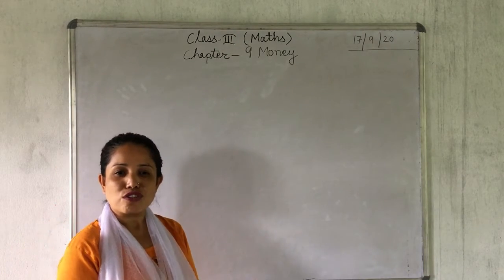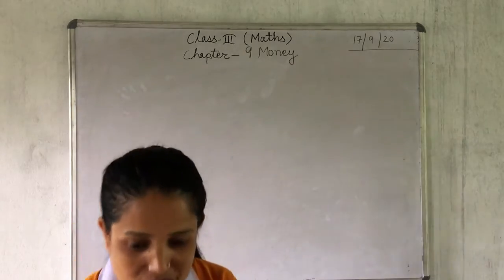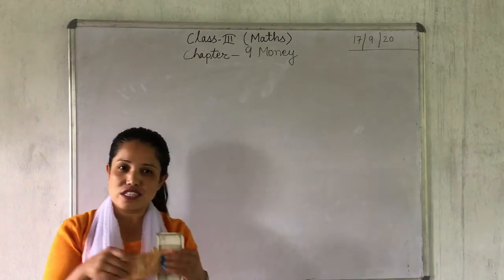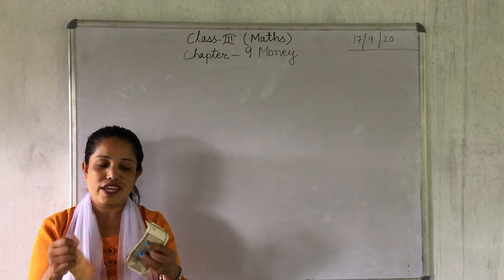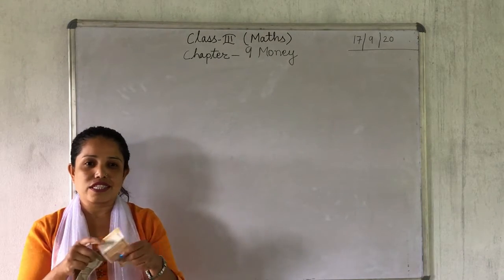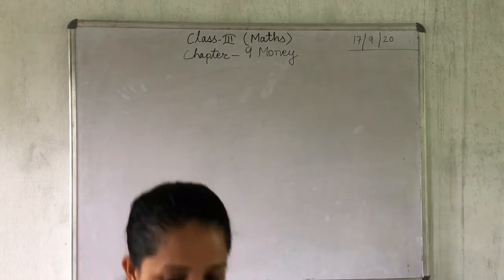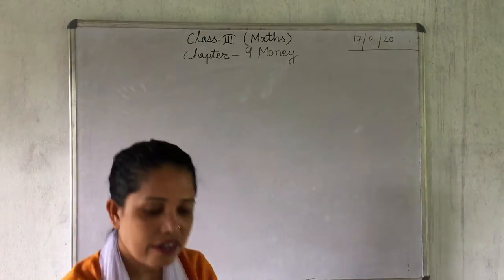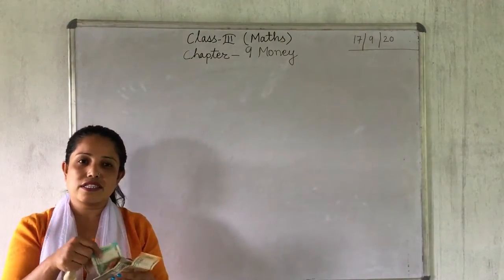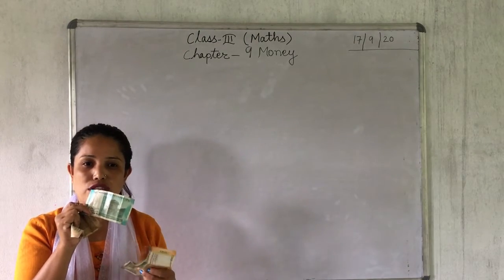Here I will show you some rupee notes. This is a 20 rupees note. This is a 500 rupees note, this is a 200 rupees note, this is a 10 rupees note, and this is a 50 rupees note.